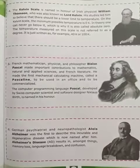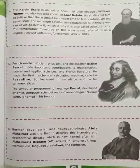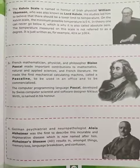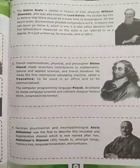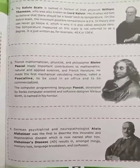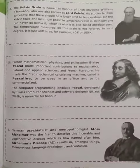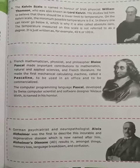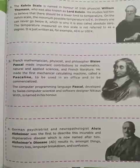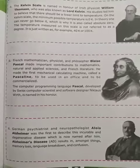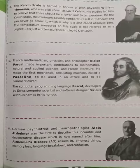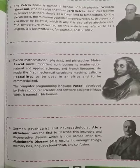The Kelvin scale is named in honor of Irish physicist William Thomson, who was also known as Lord Kelvin. His studies led him to believe that there should be a lower limit to temperature. On the Kelvin scale, the minimum possible temperature is 0 Kelvin.